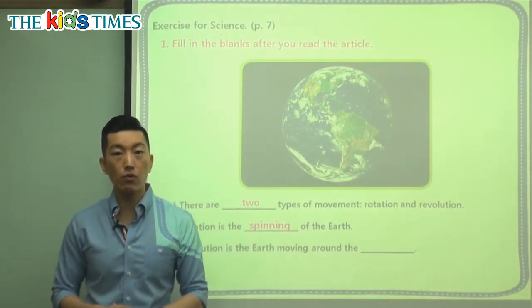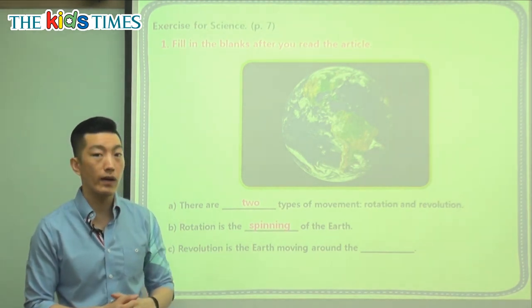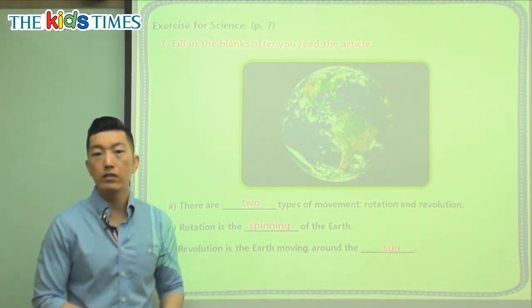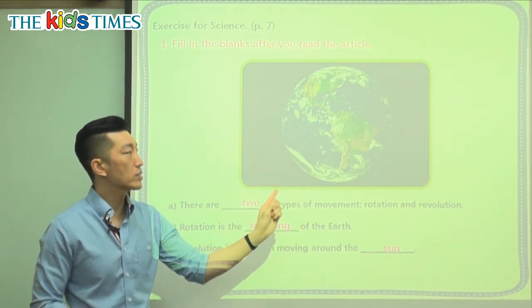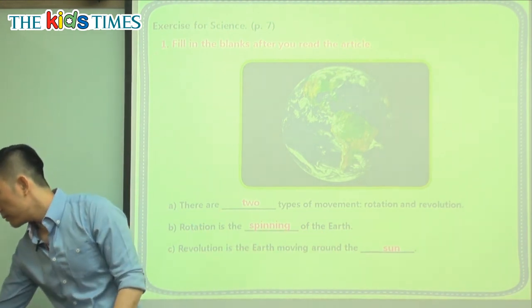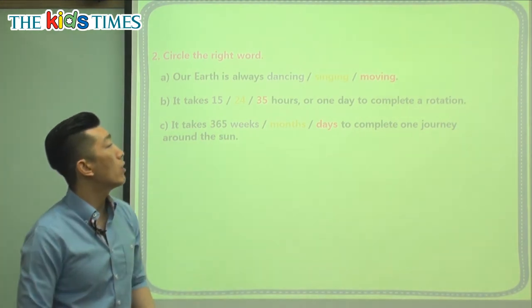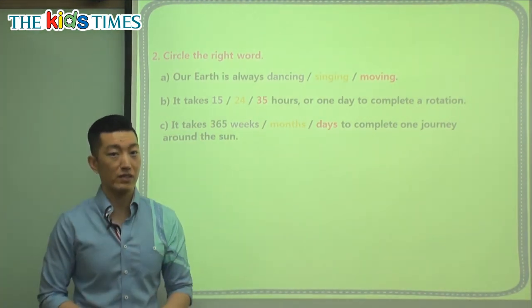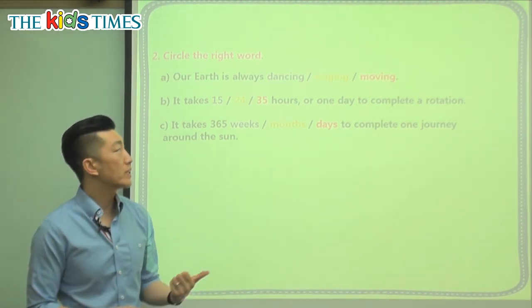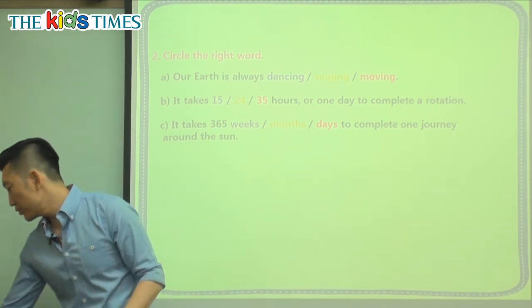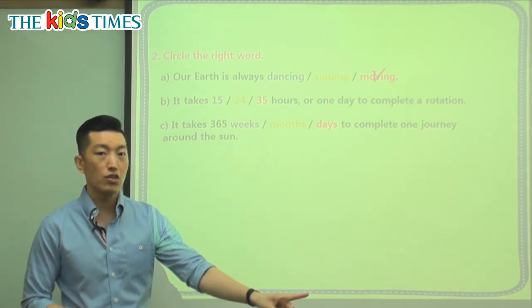Revolution is the Earth moving around — what is Earth traveling around? It takes 365 days for us to go around the Sun. Let's choose the correct words to complete our sentence. Our Earth is always dancing, singing, or moving? Our planet can't actually dance or sing, but it can move. So the correct answer is: our Earth is always moving — it's spinning and it's traveling around.